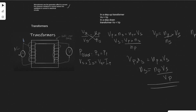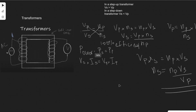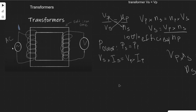In transformers, electrical power is conserved. If the secondary power equals the primary power, the transformer is 100% efficient. Since power P = VI, this means: secondary power = Vs × Is and primary power = Vp × Ip. We can be asked to solve problems using these relationships.